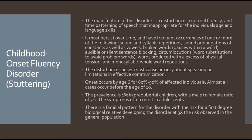The disturbance must cause anxiety about speaking or limitations in effective communication. Onset occurs by age six for 80 to 90% of affected individuals — that is a potentially testable point. Almost all cases occur before the age of 10, so childhood onset fluency disorder would not be diagnosed at age 11, 12, or 13. The prevalence is approximately 1% in prepubertal children, and the male to female ratio is 3 to 1.